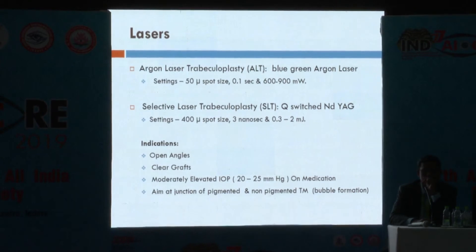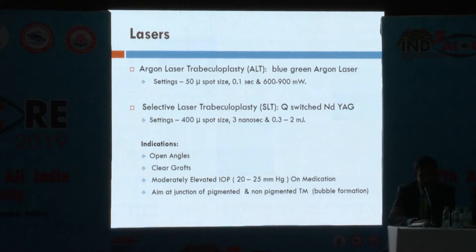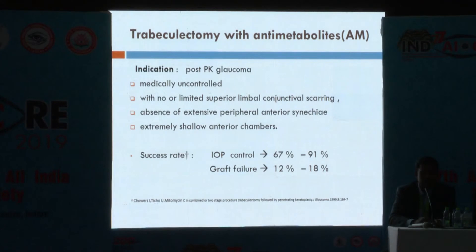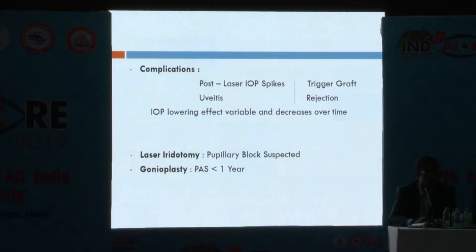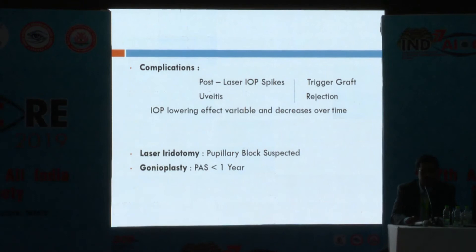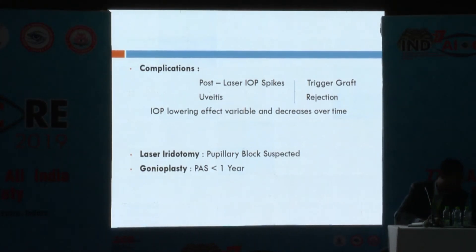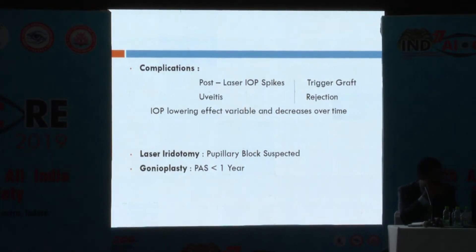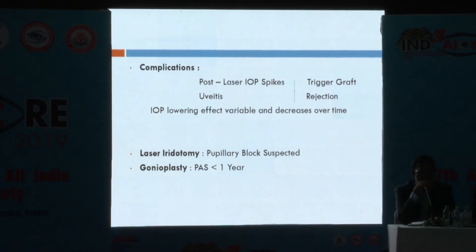Argon laser trabeculoplasty and selective laser trabeculoplasty can be tried in open angles with clear grafts and moderately elevated intraocular pressure. The IOP-lowering effect of these lasers is variable and decreases over time. Post-operative IOP spikes and uveitis can trigger graft rejection, so caution is needed. Pupillary block, whenever suspected, can be managed with Nd:YAG laser iridotomy when graft clarity is present. Gonioplasty can be done when PAS is less than one year old.